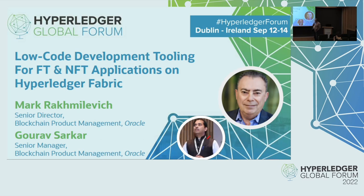We're going to talk a little bit about local development tooling and show you Blockchain App Builder, which is a technology that Oracle has developed over the last couple of years to work with Hyperledger Fabric to automatically generate chain code. And while it started as a more generic capability, we have also added support for both fungible and non-fungible tokens in it.